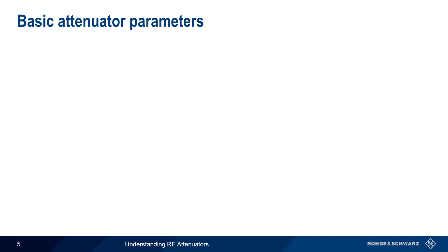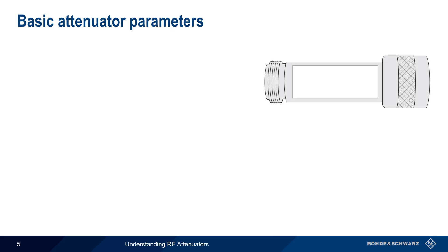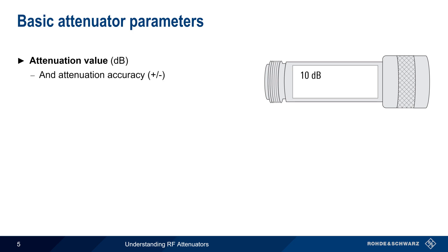Let's briefly cover basic attenuator parameters. The most fundamental of these is, of course, the attenuation value, or the amount of attenuation provided. This is normally given in decibels or dB. Although not commonly shown on the attenuator itself, the attenuation accuracy is typically given on the datasheet as well.